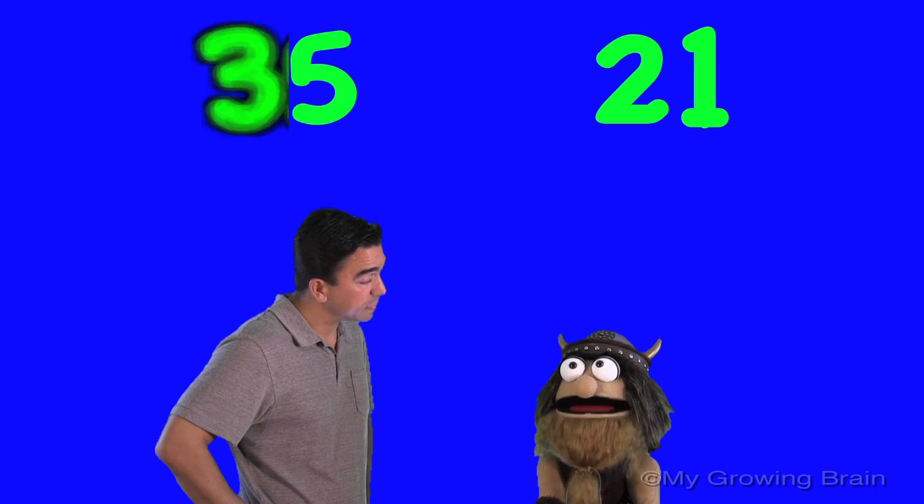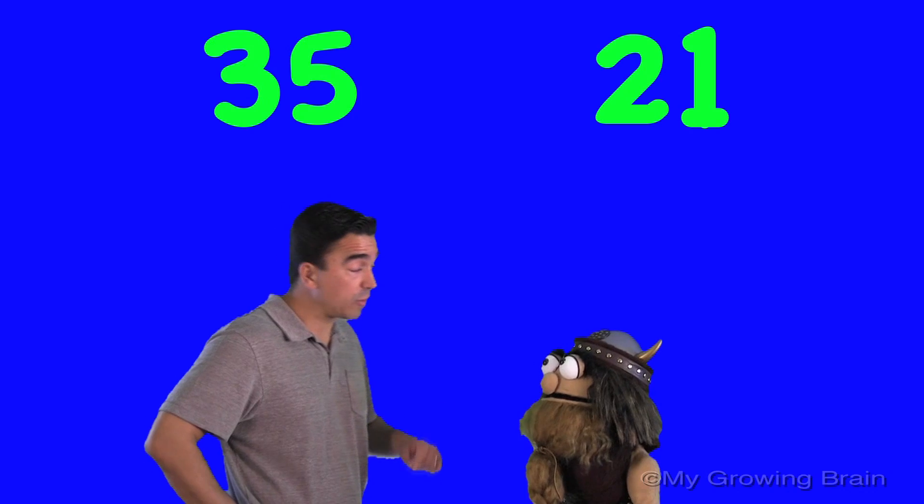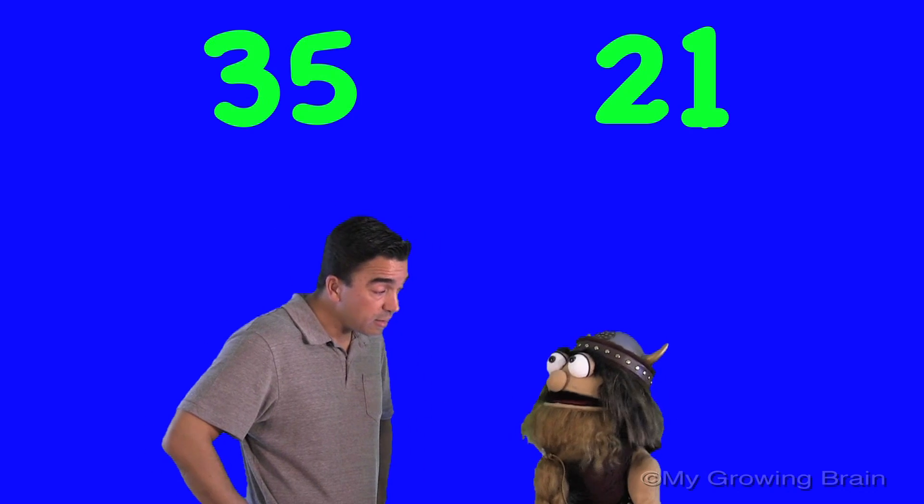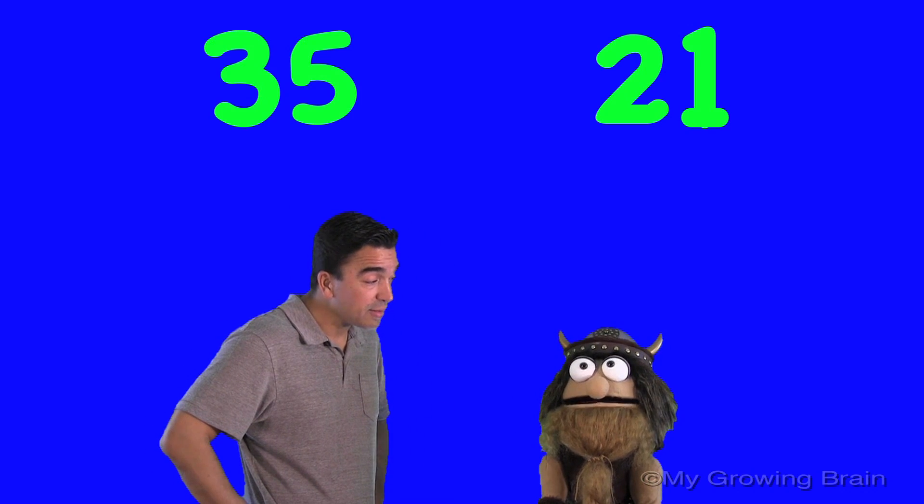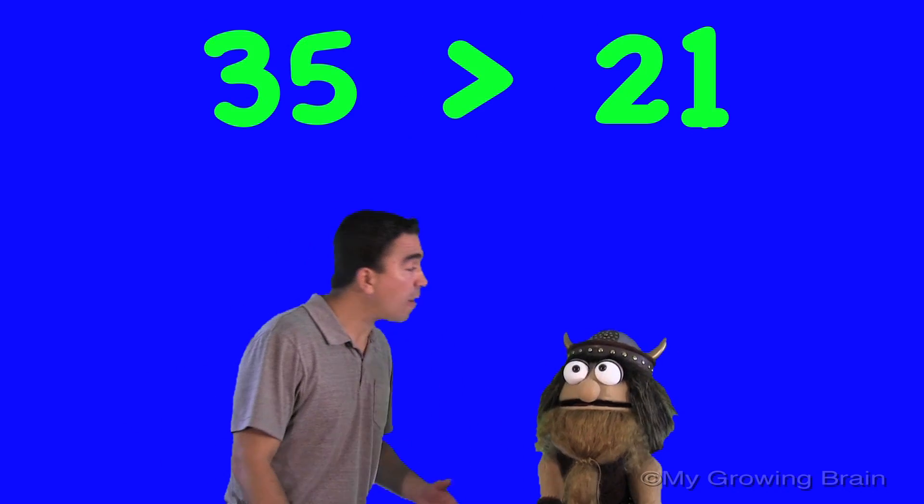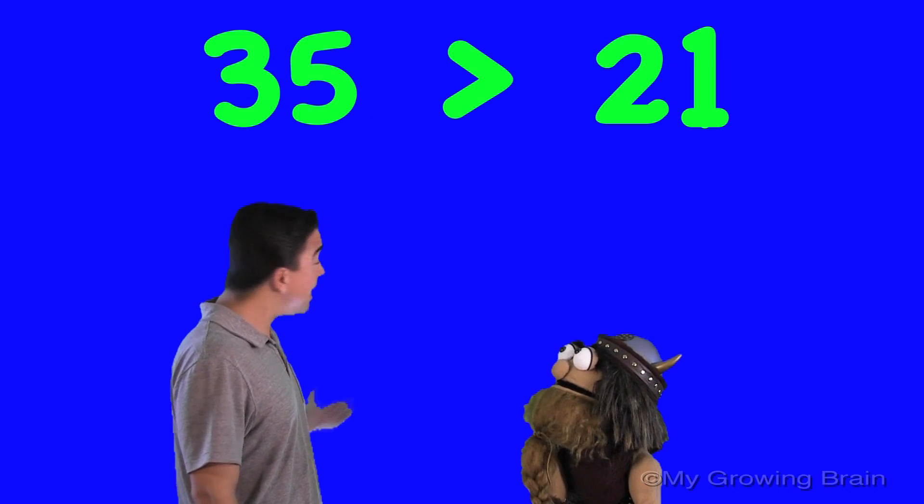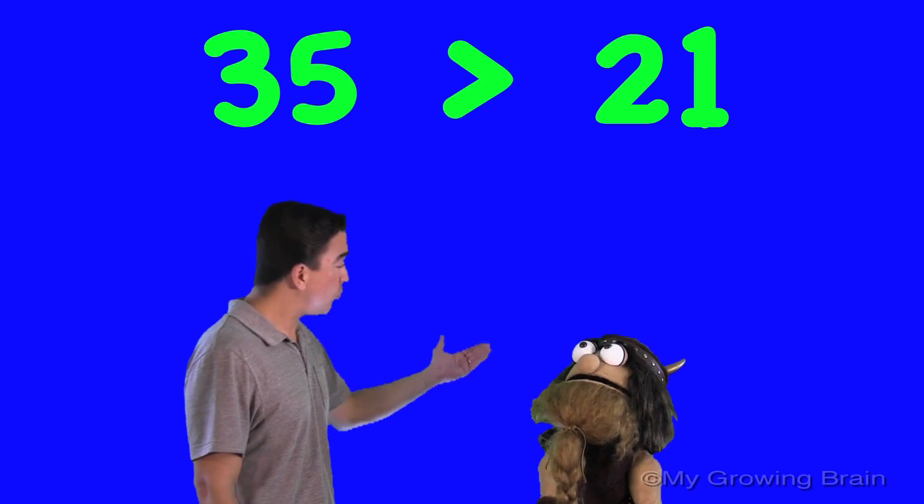Well, 3 is bigger than 2. That's right. So, therefore, what does that mean? Well, the alligator would want to eat 35. That's right. The bigger amount. Okay, so this is how we read it. From left to right. 35 is greater than 21.